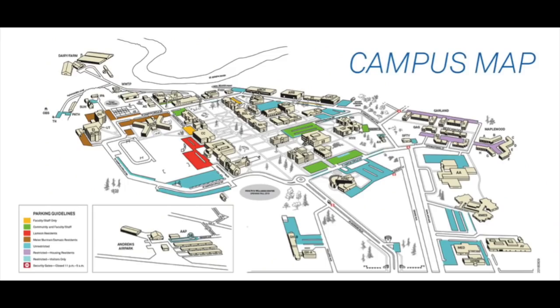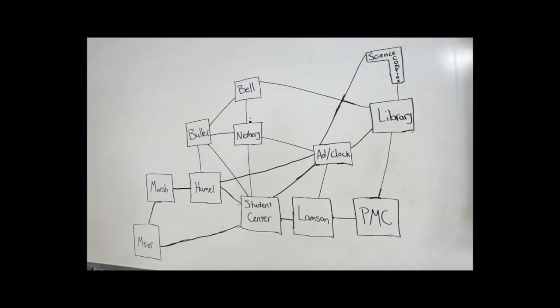For our video today, we have simplified a selection of the buildings on the Andrews University campus and will attempt to figure out if there is an Eulerian path or circuit in our graph. We will use our buildings as our vertices and our sidewalks as our edges. To make the graph simpler for this project, we have modified which sidewalks we will be using. Let's say we want to go from Hamel Hall to the Science Complex, but we want to travel on each sidewalk on our way there. How would we do that?